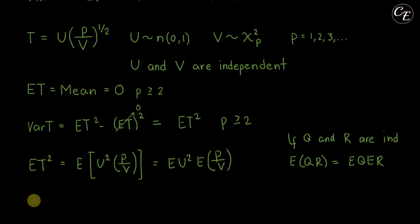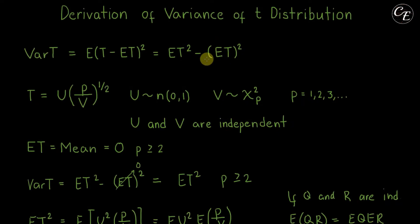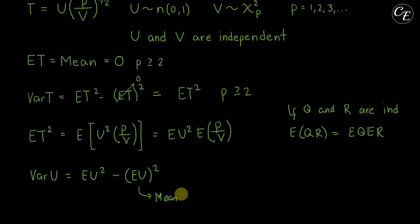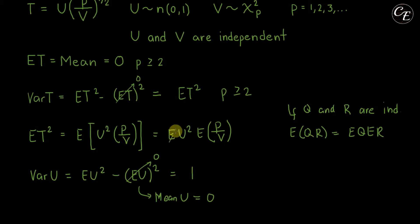For the expectation of u squared, we use the variance formula: variance of u equals expectation of u squared minus the square of expectation of u. Since u has a standard normal distribution, its mean is 0 and its variance is 1. So the expectation of u equals 0, which we cancel, and the variance of u equals 1. Therefore, the expectation of u squared equals 1.